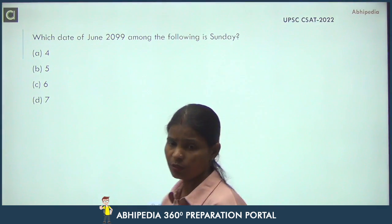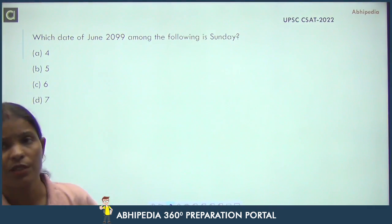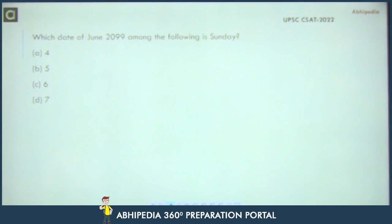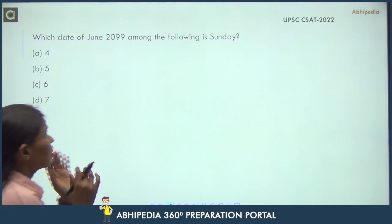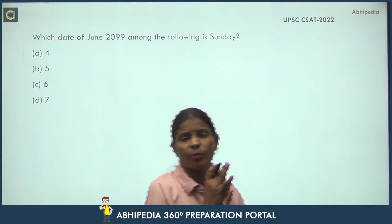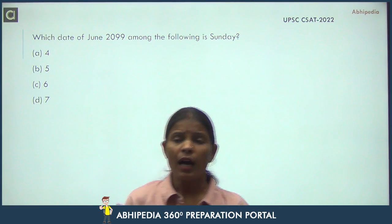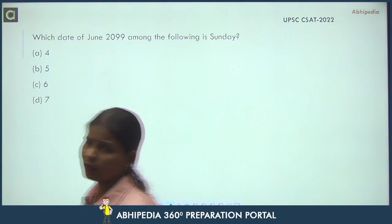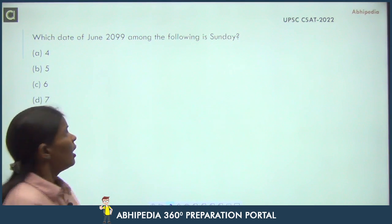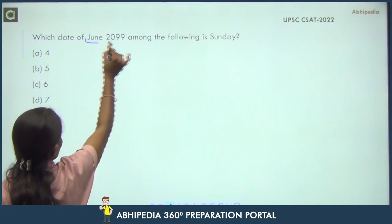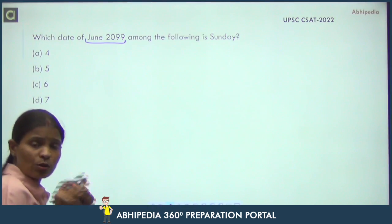The first question is on the screen. What is the question? 'Which date of June 2099 among the following is Sunday?' So we need to find out which date in June 2099 falls on a Sunday.